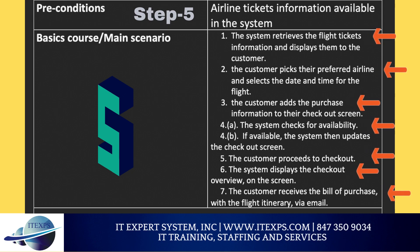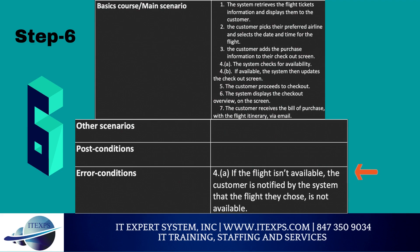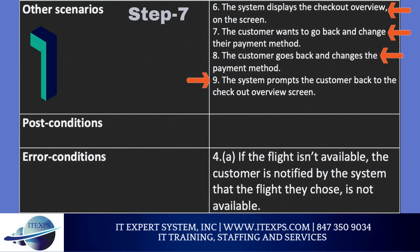Once the main scenarios have been filled out, we're going to focus on the error conditions. Looking at the main scenarios, we would have to come up with a logical error that might take place. The obvious one would be: if the flight isn't available, the customer is notified by the system that the flight they chose is not available. There could be many other error conditions, but for the sake of this video, that's the only one we'll go with. The other scenarios section is used for showing alternative paths through the system that require a slightly different set of steps.